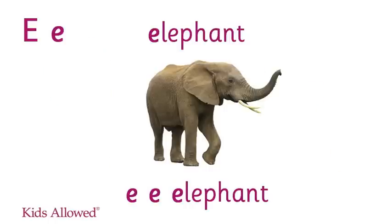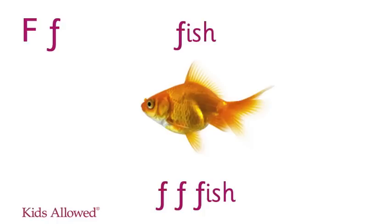E is for elephants. E, E, elephants. F is for fish. F, F, fish.